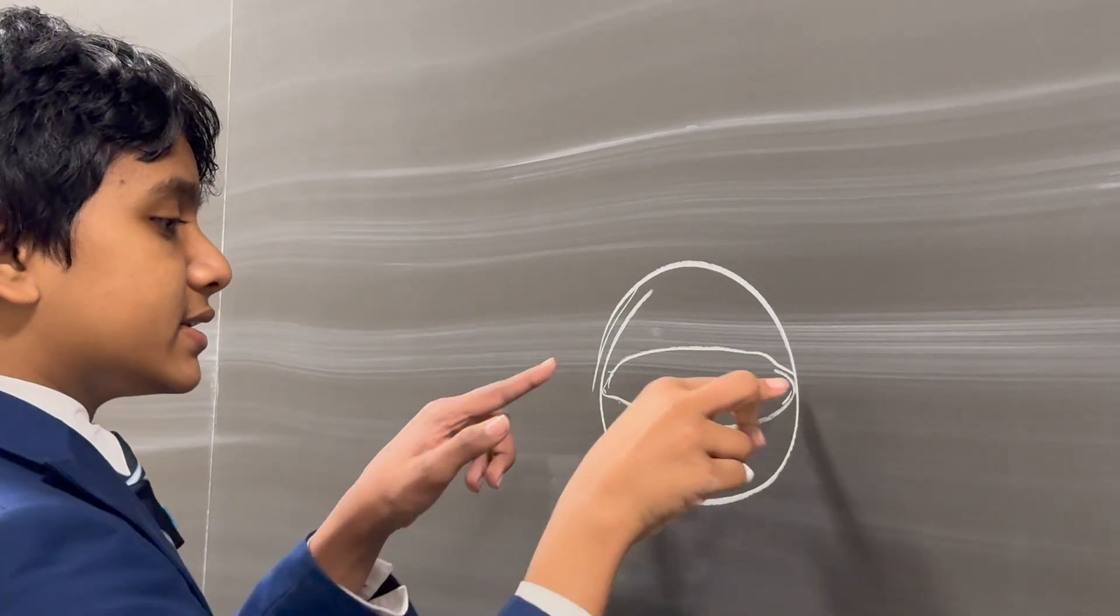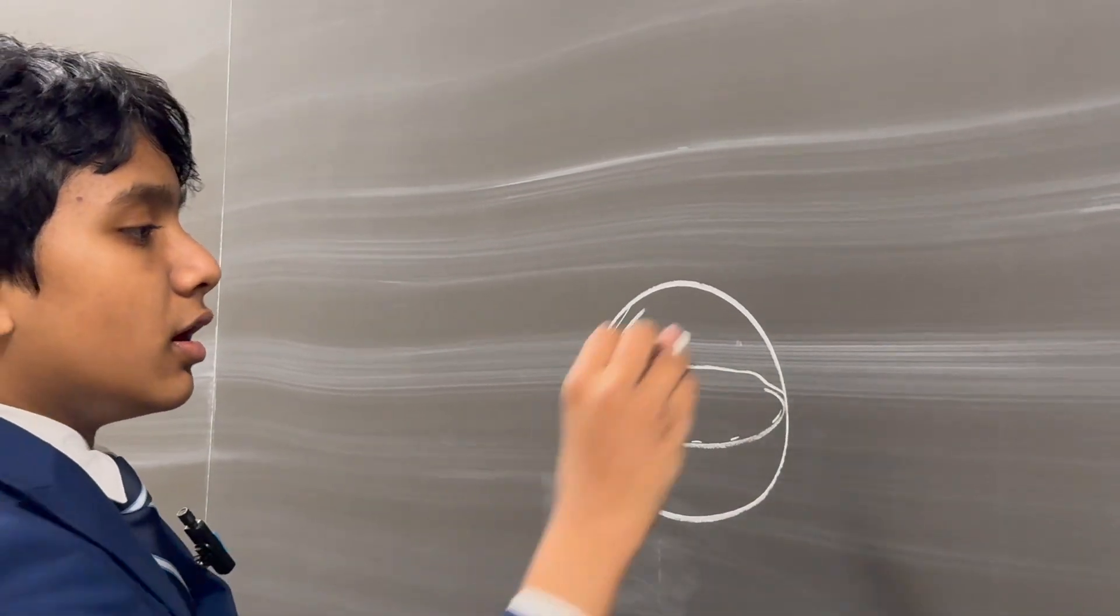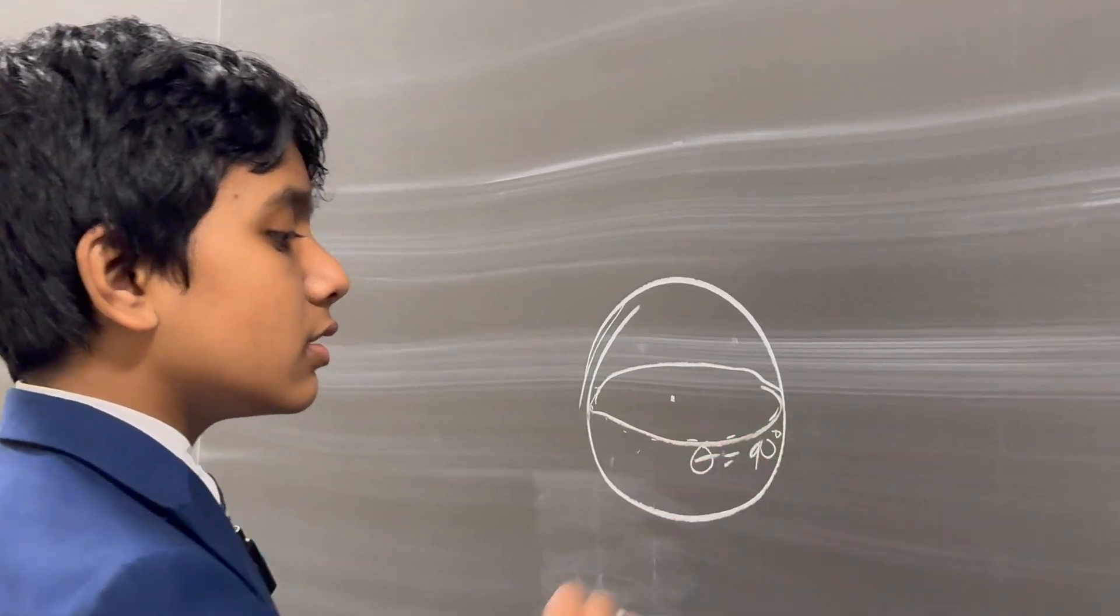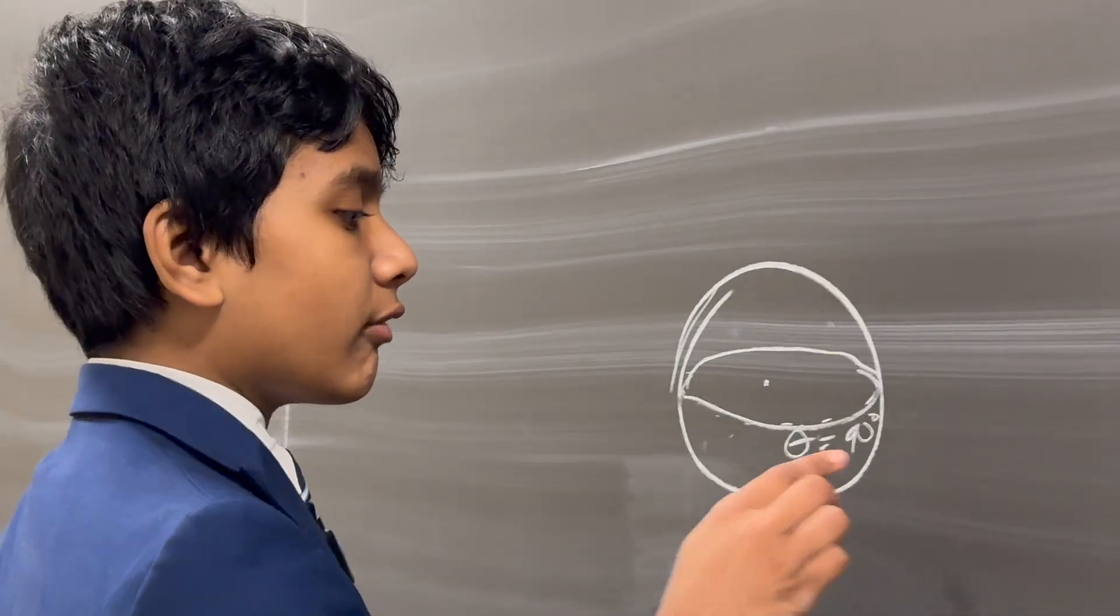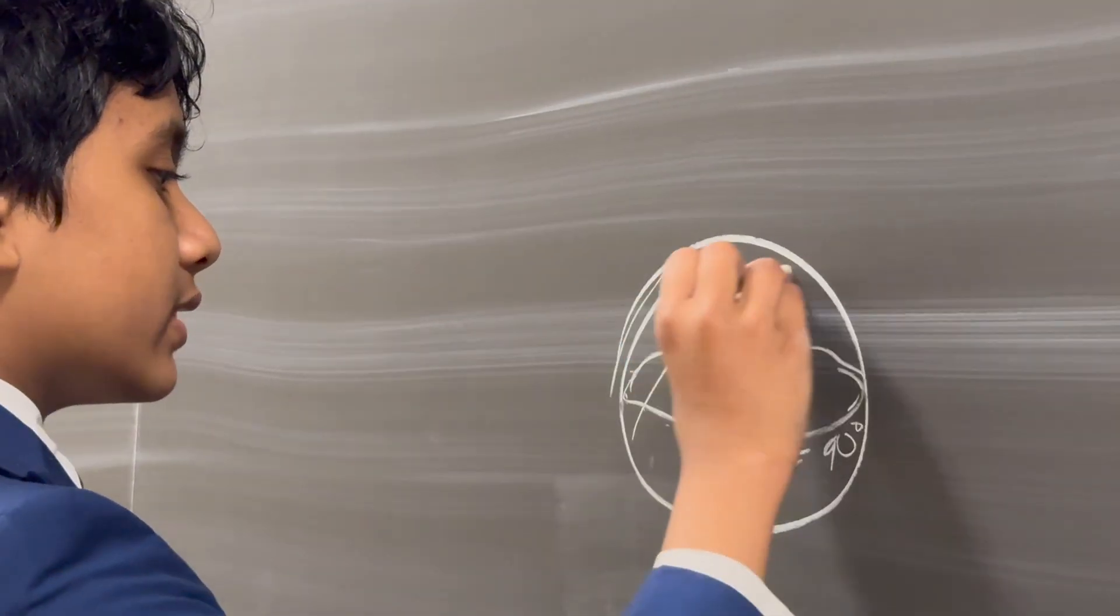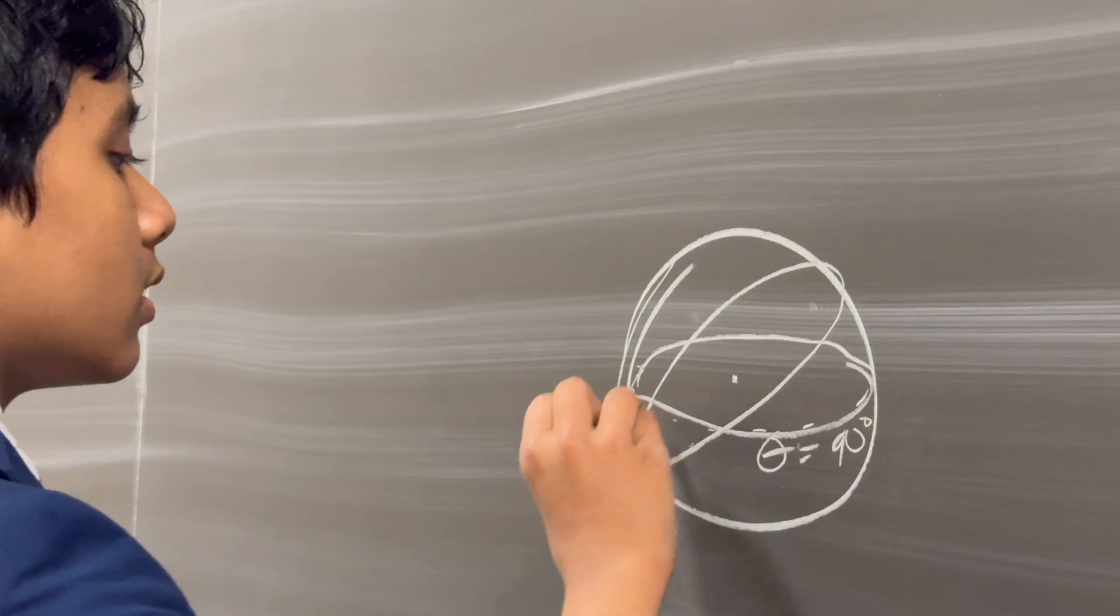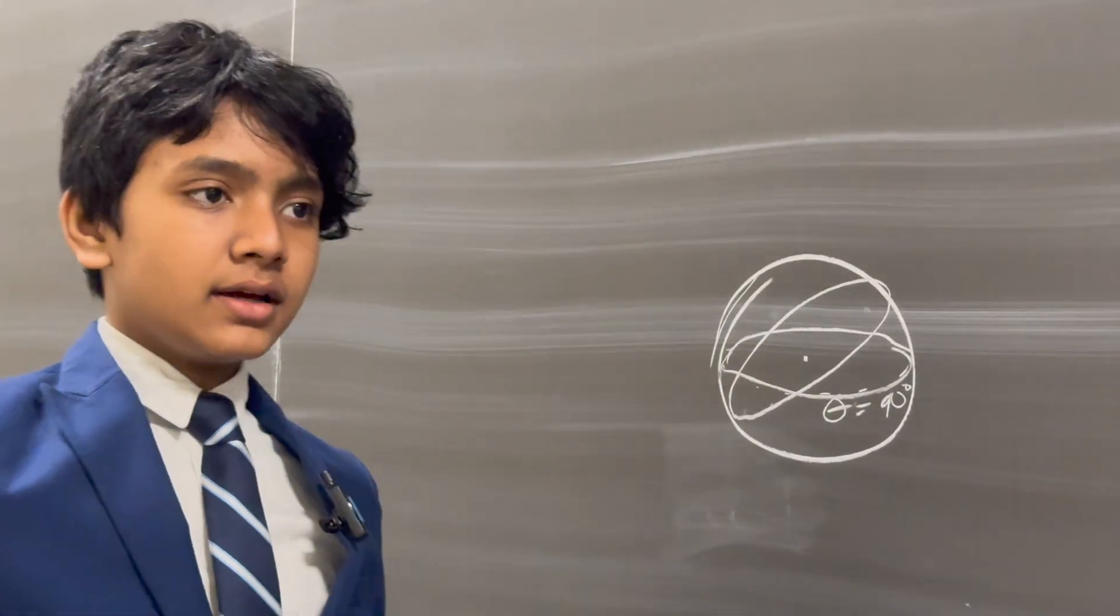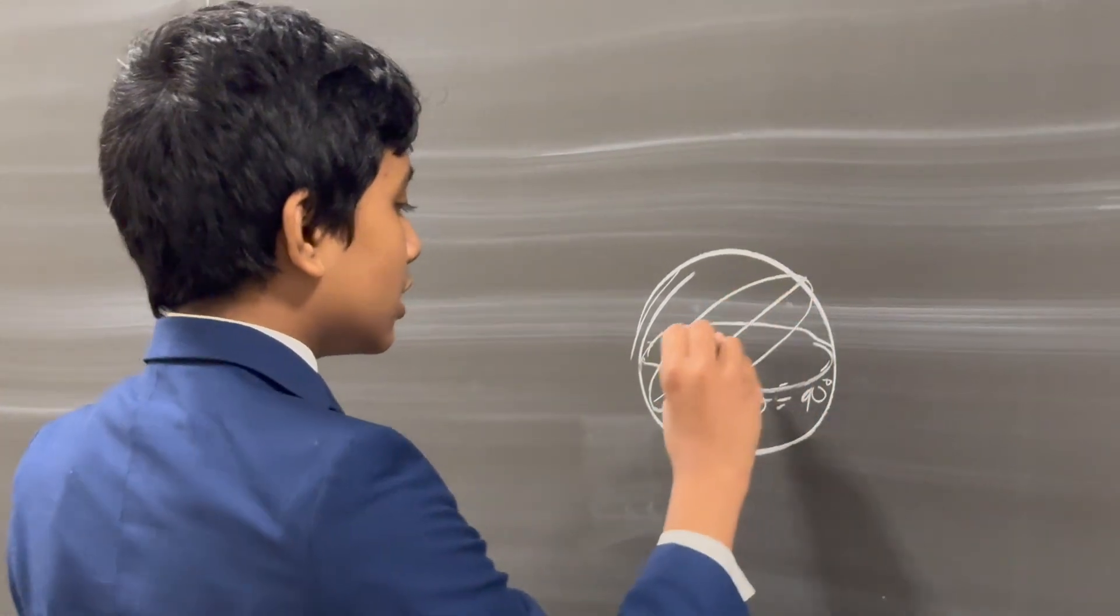and then we can just change our reference frame, so this is, say, theta equals 90 degrees, and then we can change our reference frame so that theta is constant for any ring that contains a diameter, just like so.